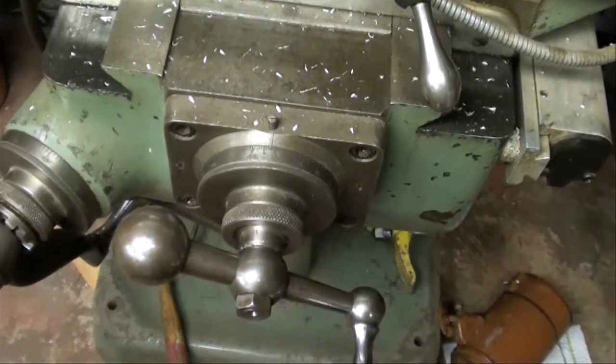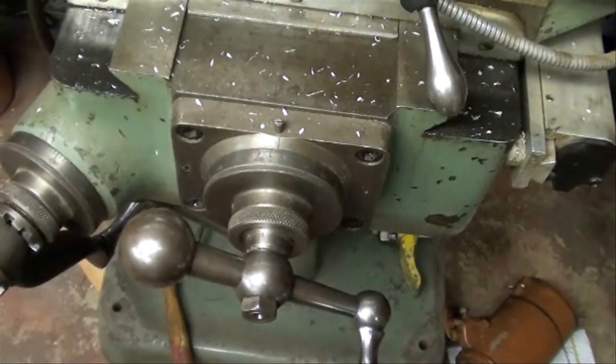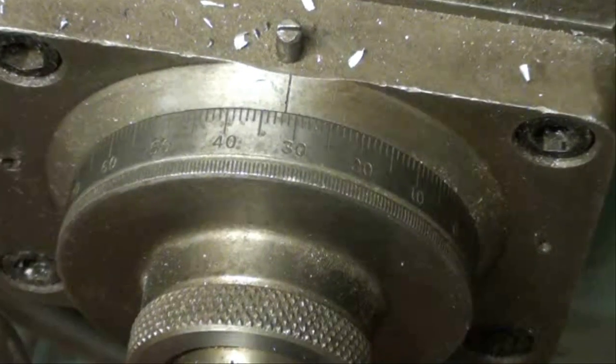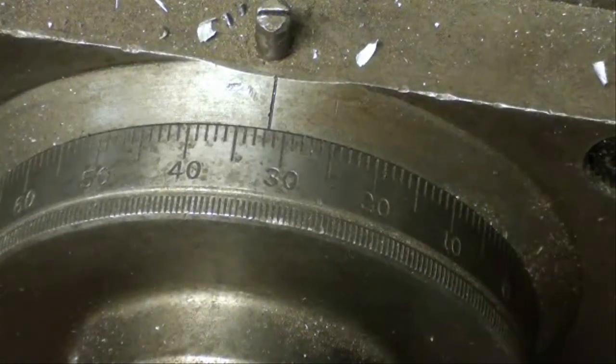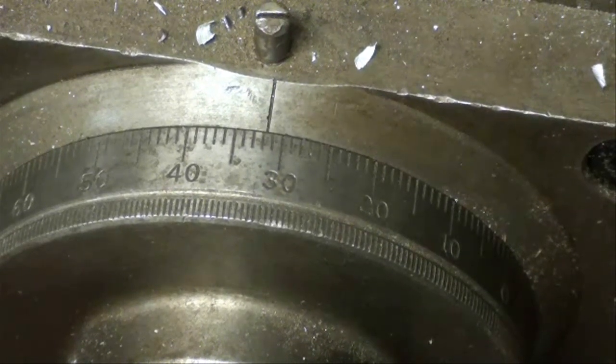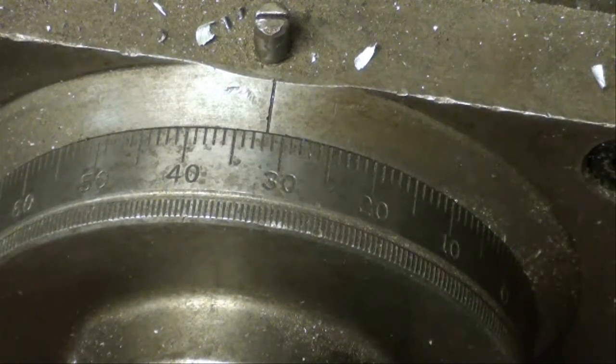Now this is the dial on Bridgeport Mill. I know we're off lathe for a second here, but these are three-inch diameter dials. So they're quite easy to read. I think you can see here the relationship between the diameter of the dial and the ease of reading, especially as you enter old age.